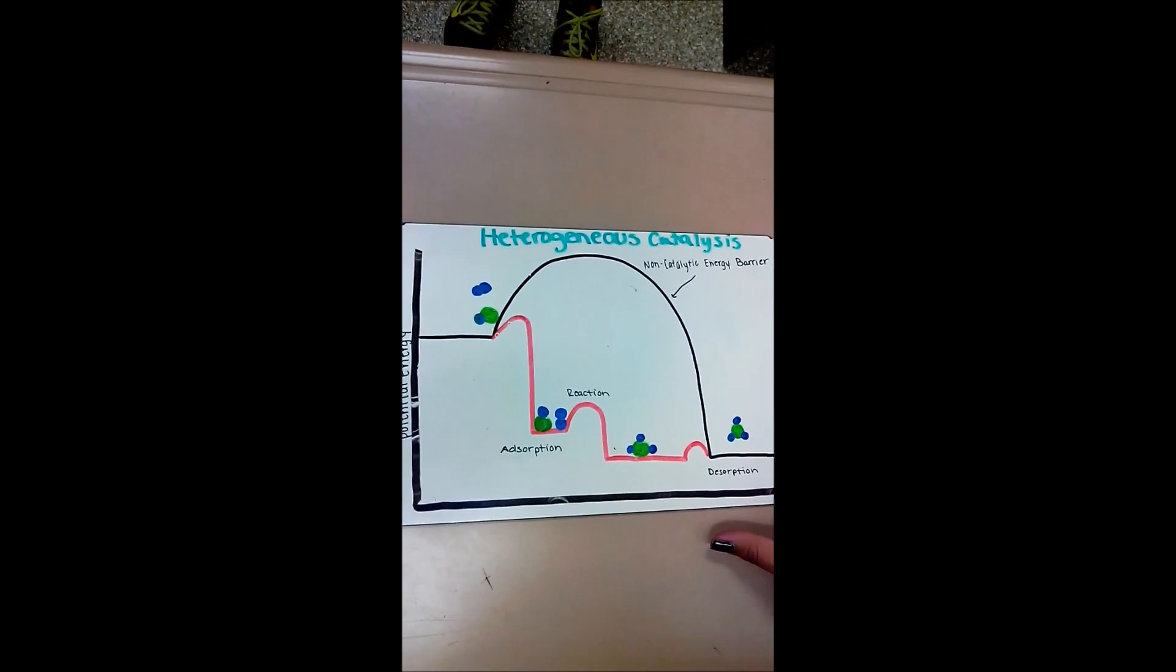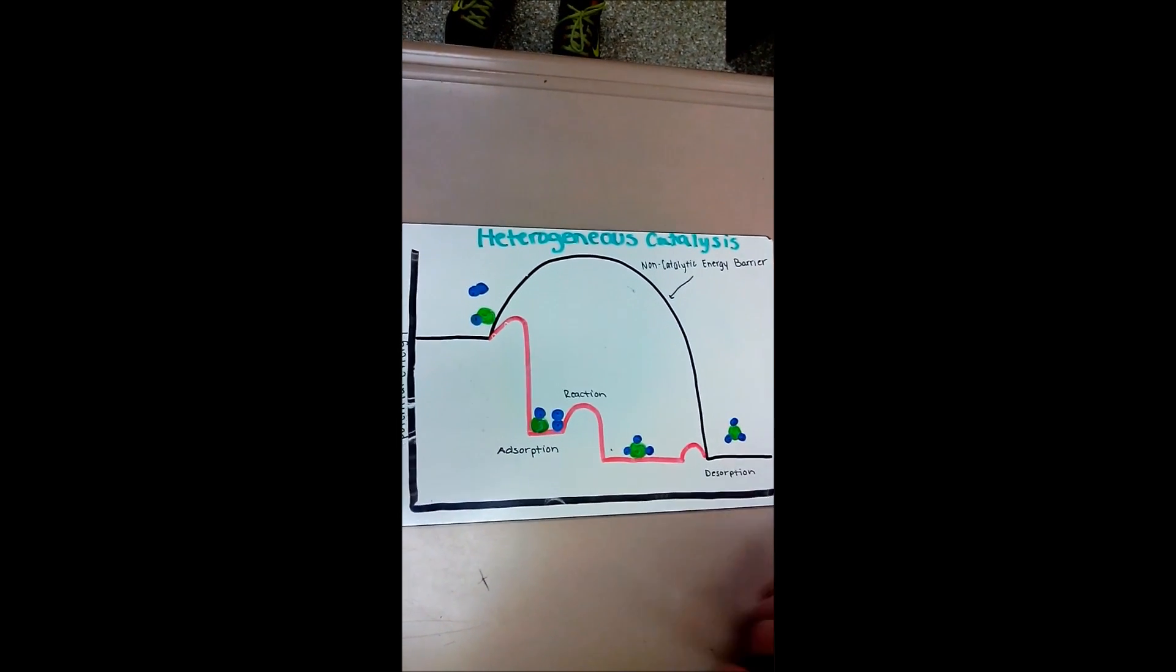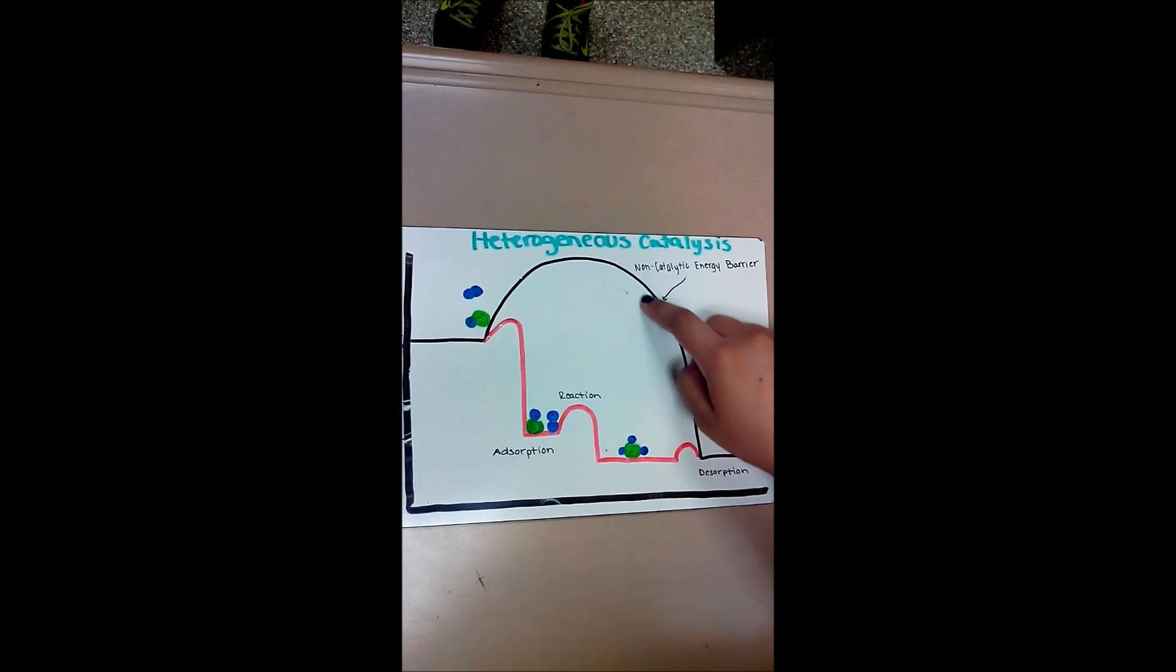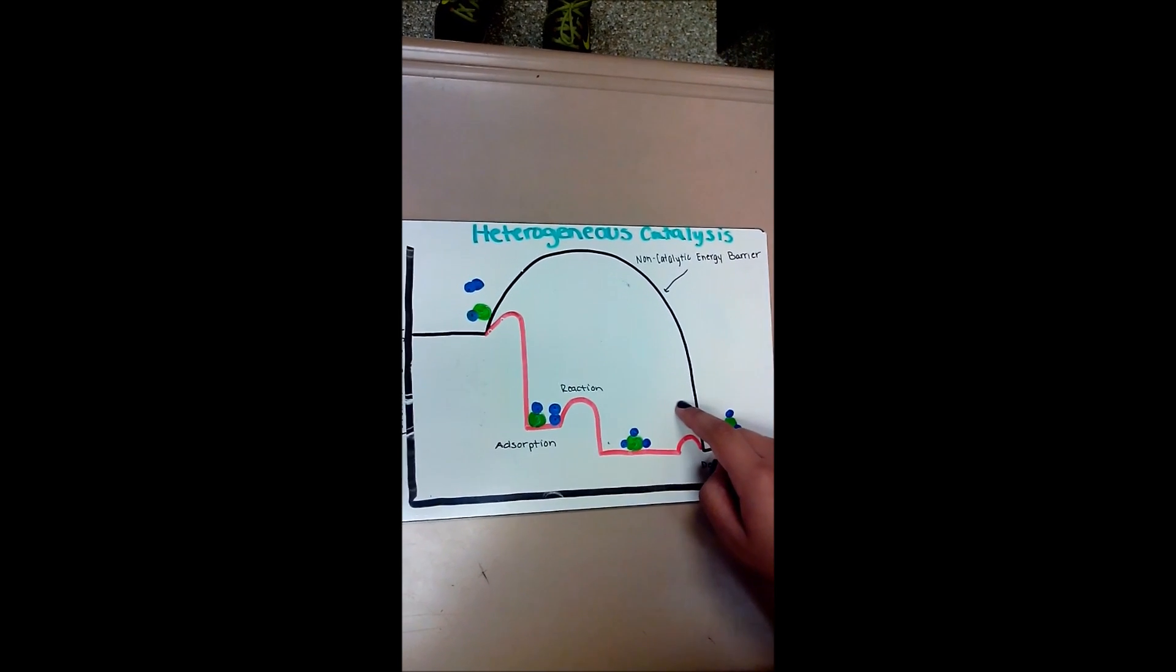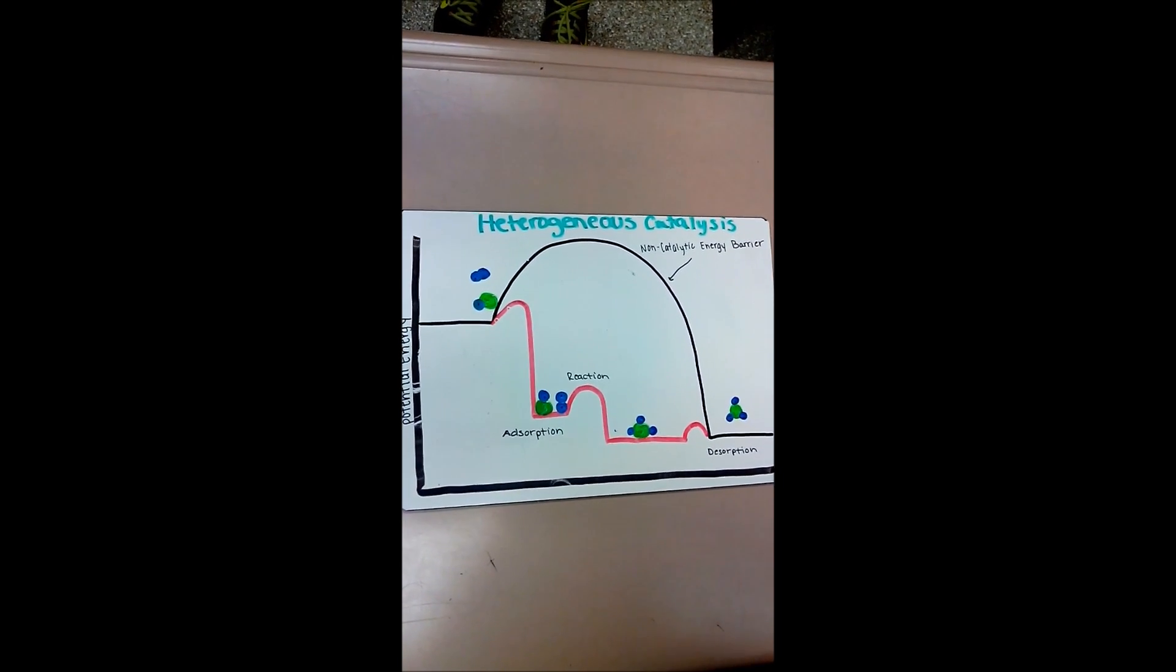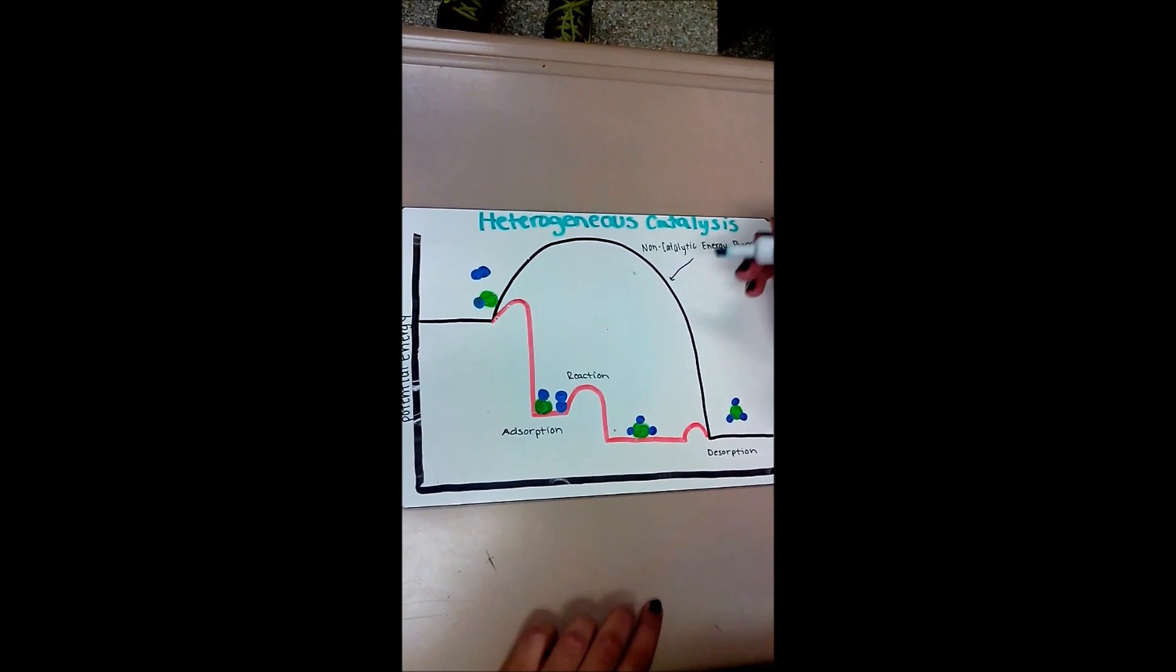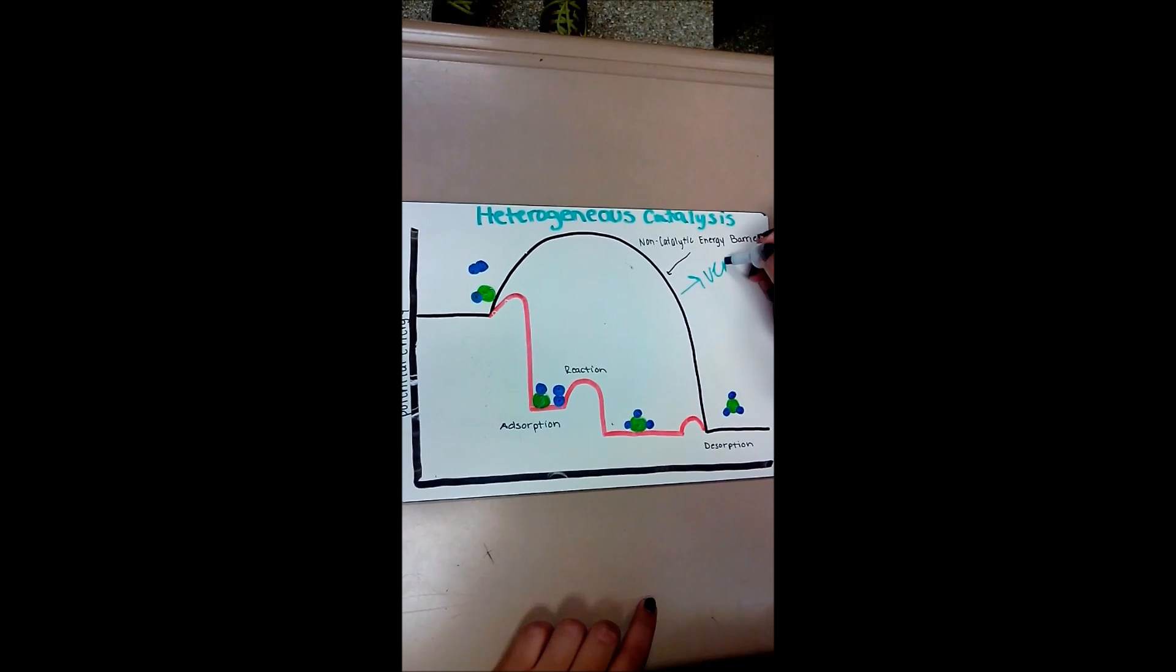Here we have an example of what a heterogeneous catalyst would look like. Here, as you can see with this black solid line, would be how the reaction would go without a catalyst. And this would be very slow.